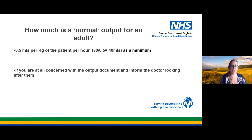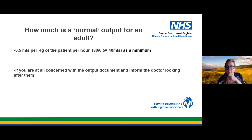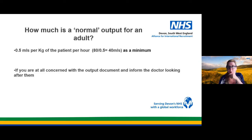The normal urine output for an adult is 0.5 ml per kg per hour. So for an 80 kg adult, we'd be looking at a minimum of 40 mls an hour — and that is an absolute minimum. For nurses working in intensive care or high dependency areas, you will have urometers on catheter bags and you will be monitoring every single drop and marking it on your fluid balance chart. It's also important to escalate quickly if you're concerned about a patient's urine output, as it is one of the first signs that a patient is going to deteriorate.